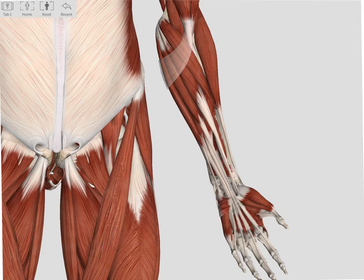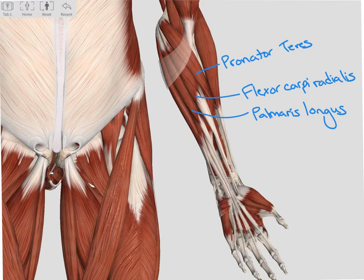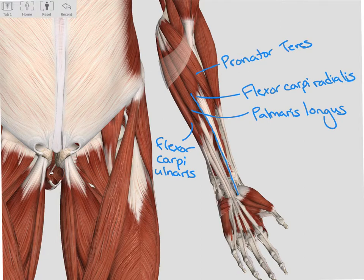Looking again at the wrist flexors, we see our three primary muscles of flexion. We have our flexor carpi radialis on the radial side, just below our pronator teres. Palmaris longus is in the middle, and then our flexor carpi ulnaris on the ulnar side. We can also follow them down to their insertion. Our flexor carpi radialis inserts on the carpals on the radial side. Our flexor carpi ulnaris comes down and attaches to the proximal end of the ulna. And our palmaris longus comes down the middle and attaches to our carpals right in the middle of the wrist.